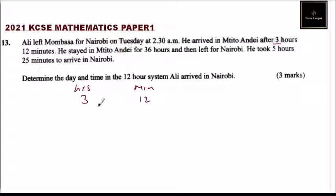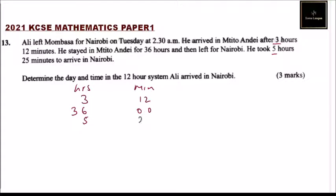Then from there, he stayed for 36 hours in Uchitwandei — that's 36 hours and 00 minutes. Then from there, he took 5 hours 25 minutes to travel to Nairobi — so we write 5 hours 25 minutes.